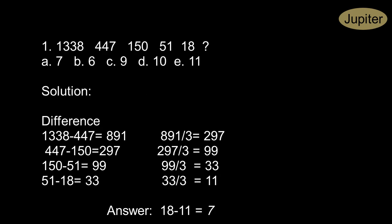Now look at the series here: 1338, 447, 150, 51, 18 and the missing number. They have given 5 options. To find out the solution for this, first we need to find out the difference between these numbers.